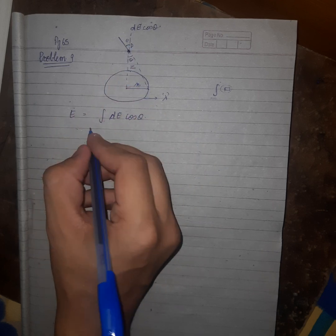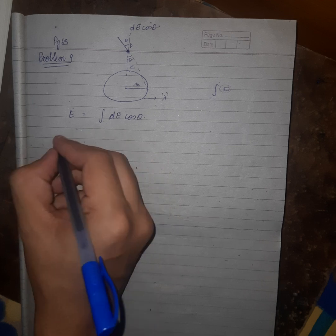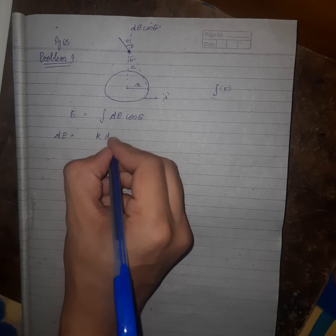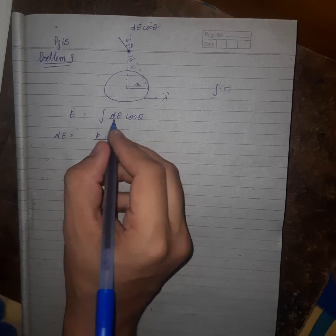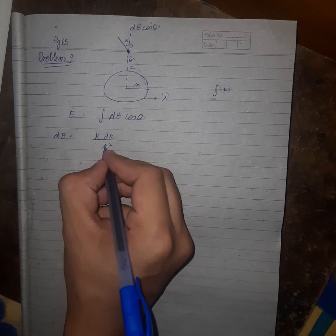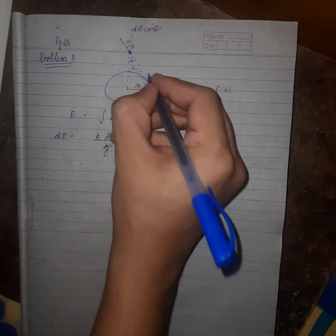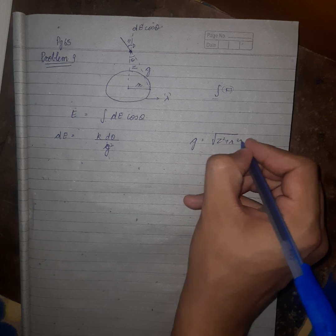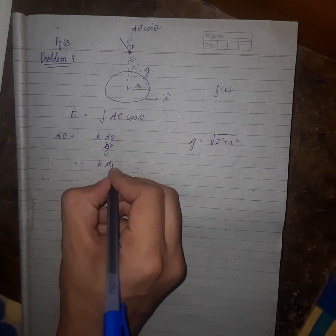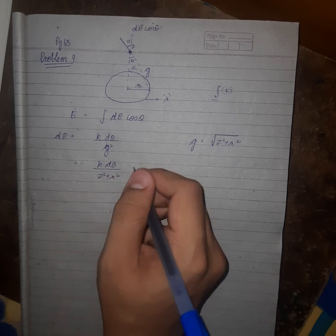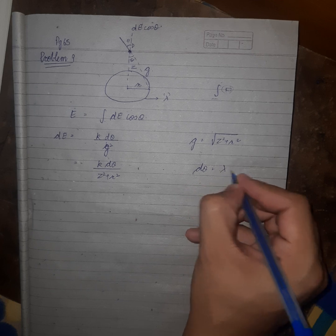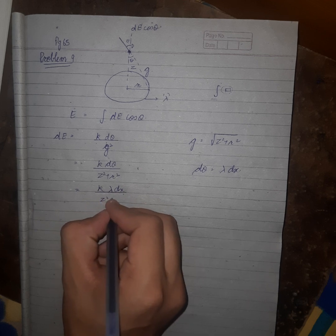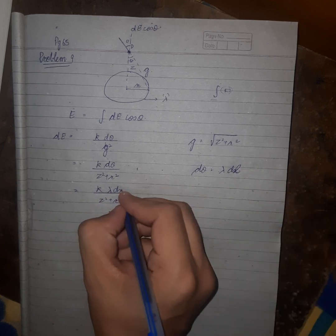What is dE here? dE is k dq upon r square, or I should say g square. Let this be g. g is equal to under root z square plus r square, because we've already used r here. Okay, k dq upon z square plus r square. And what is dq? dq is lambda dx, or dl we can write here.